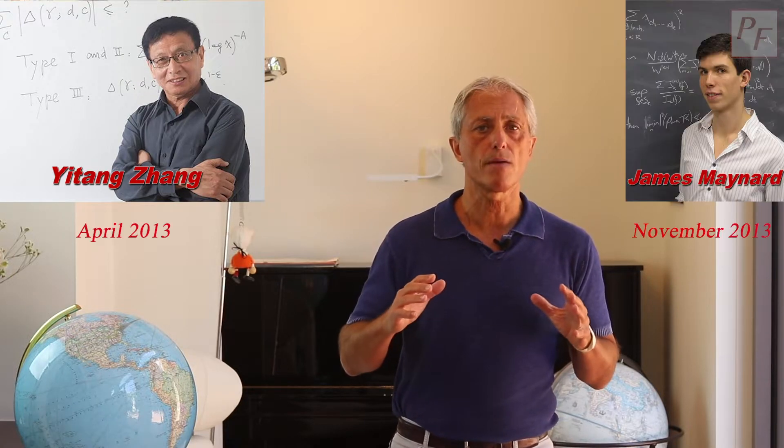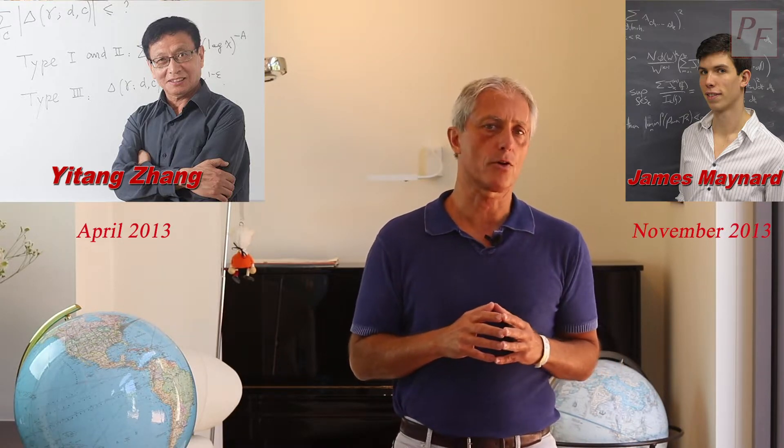But lately, there have been important advances. In 2013, the American mathematician Yitang Zhang first, and the British James Maynard later, did not prove the conjecture, but they got close enough. It is necessary to give a twist to their ideas, which we will know in later chapters.